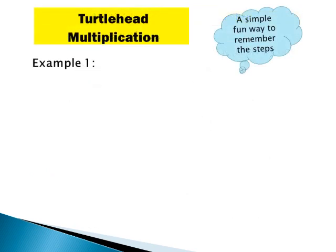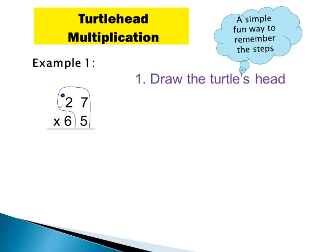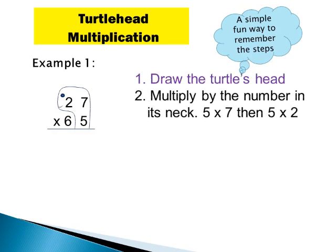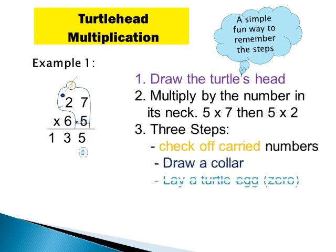Turtle head multiplication is a simple, fun way to multiply by a two-digit number. This method makes multiplying larger numbers simple. Let's multiply 27 times 65. First, draw the turtle's head. Multiply by the number in its neck: 5. 5 times 7 equals 35 — write 5 down and carry the 3 to the next column. 5 times 2 equals 10, and 10 plus 3 equals 13. Now there are 3 important steps before we move on: check off carried numbers, draw a collar, and layer turtle egg 0.